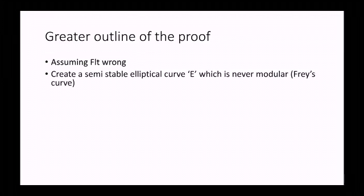Now let's come to the greater outline of the proof. Assuming that the FLT is wrong, we can create a semi-stable elliptic curve e which is never modular, which I have already discussed, that it is called the Frey curve. The semi-stable elliptic curve is created on the basis of the previous expression, that is the FLT.